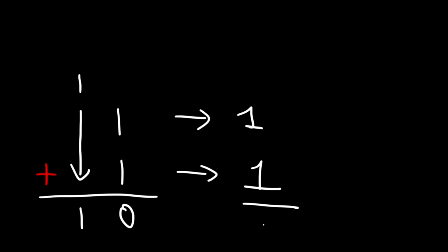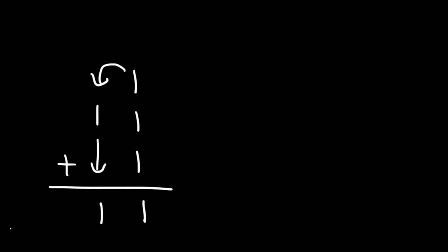So basically, 10 has the decimal equivalent of 2. Now what if you have three 1s? How can you add this? In this case, it's going to be 1 and you carry over a 1. And so you get 11. So if you have three 1s in a single column, it's going to produce an output of 11.